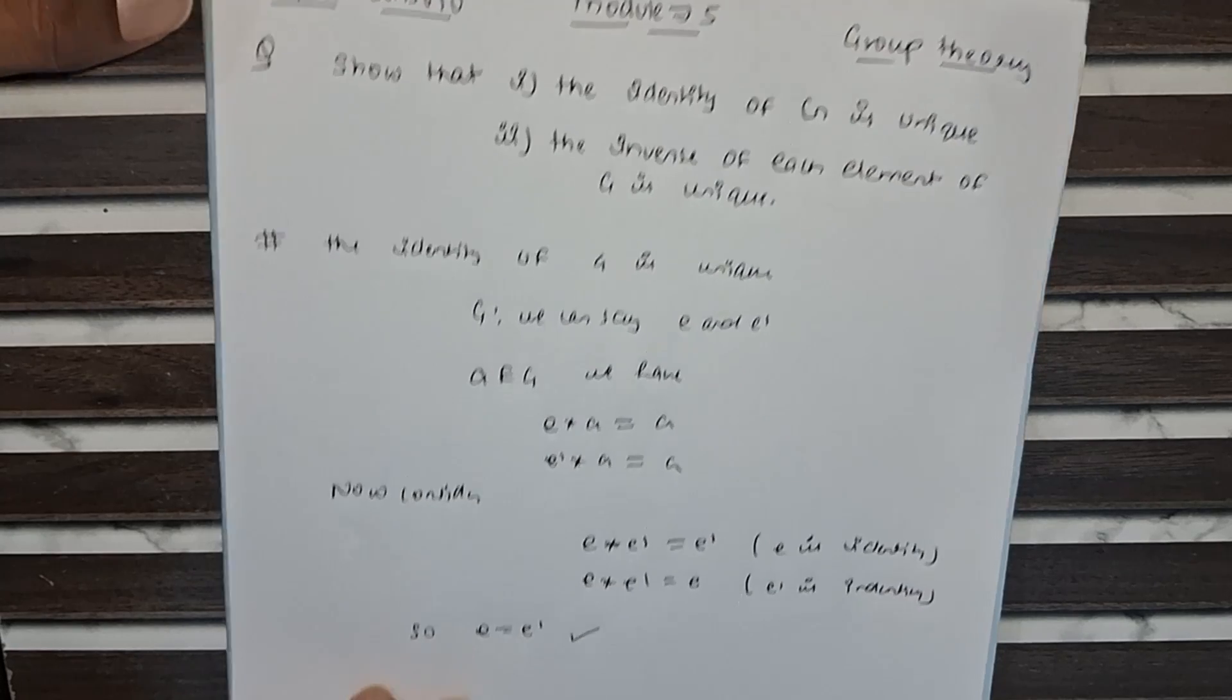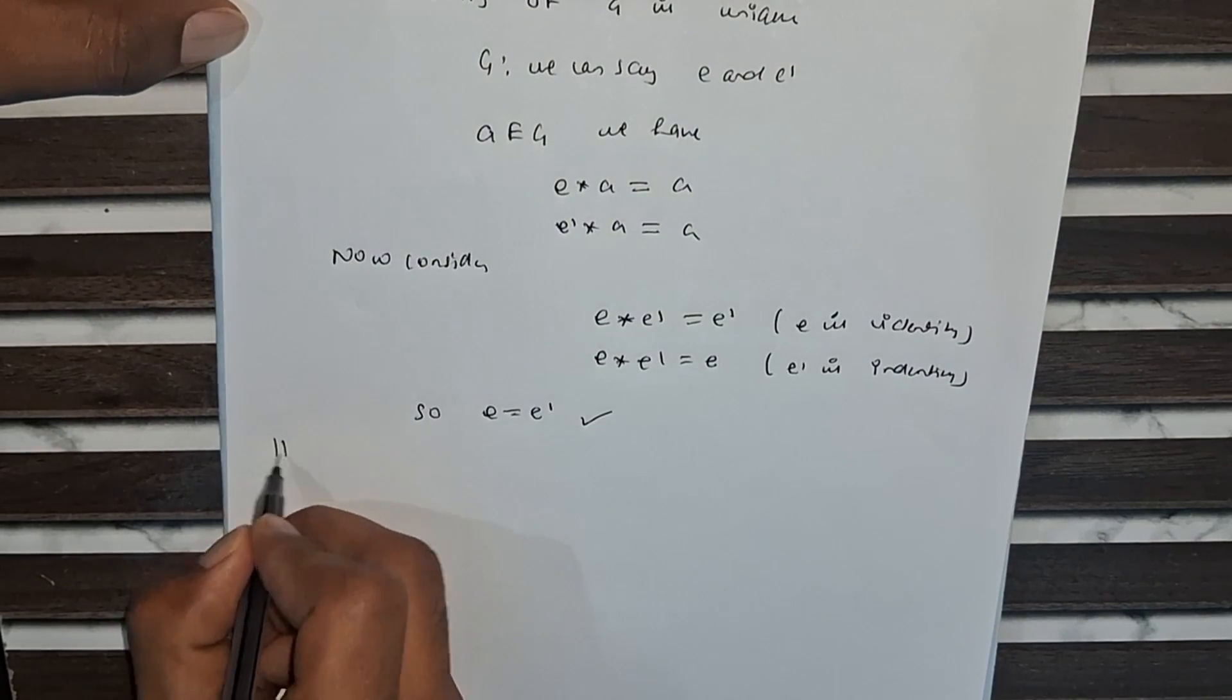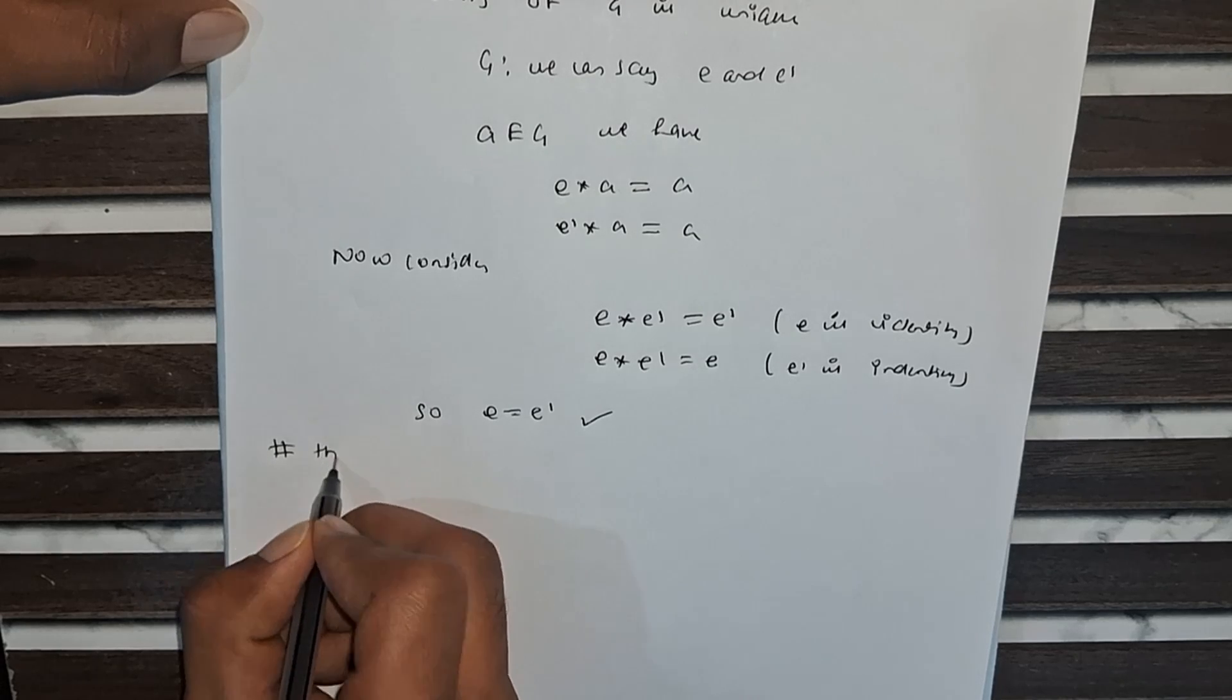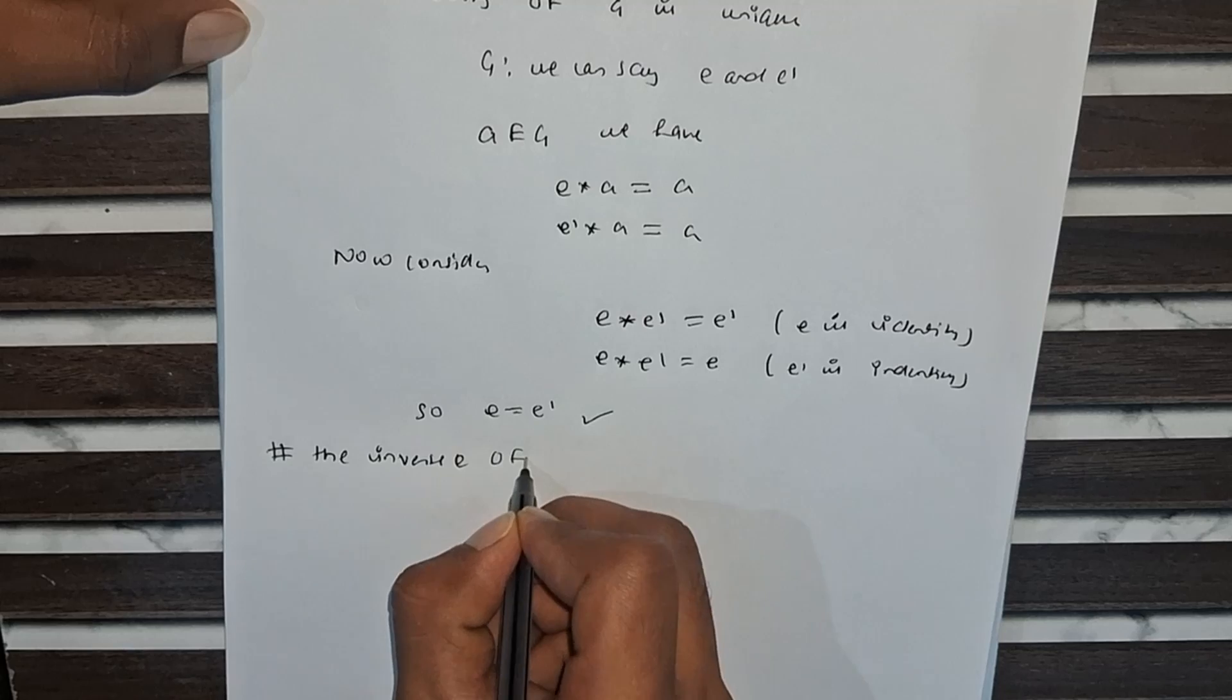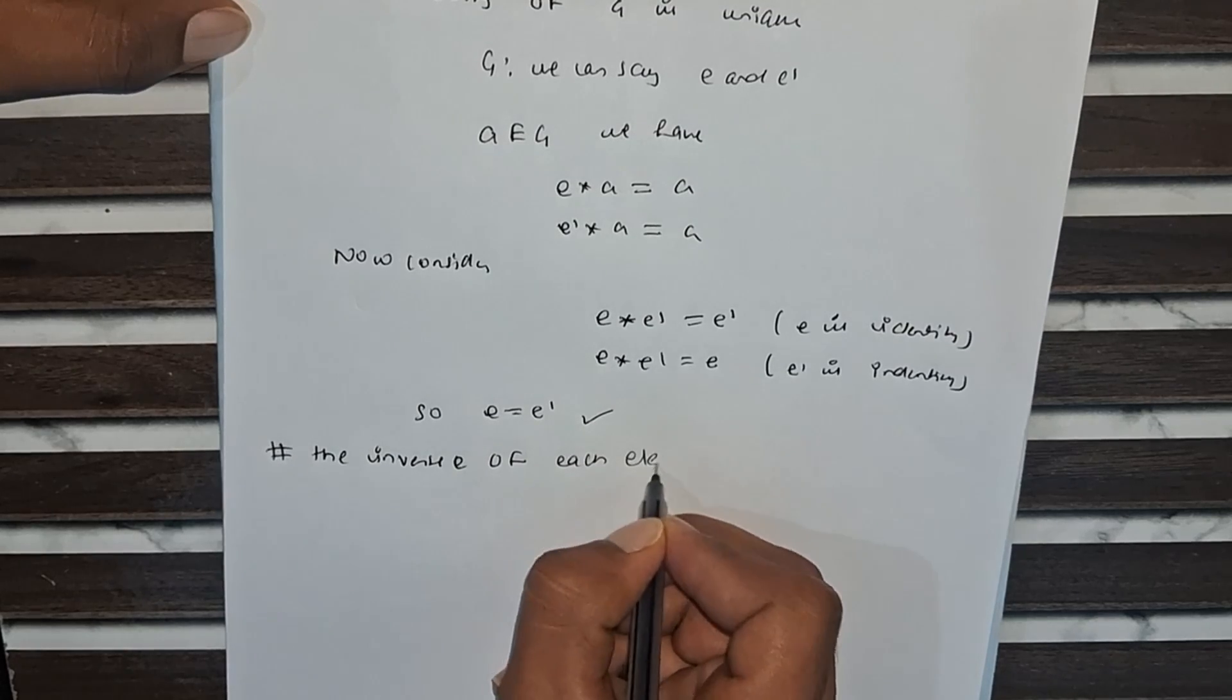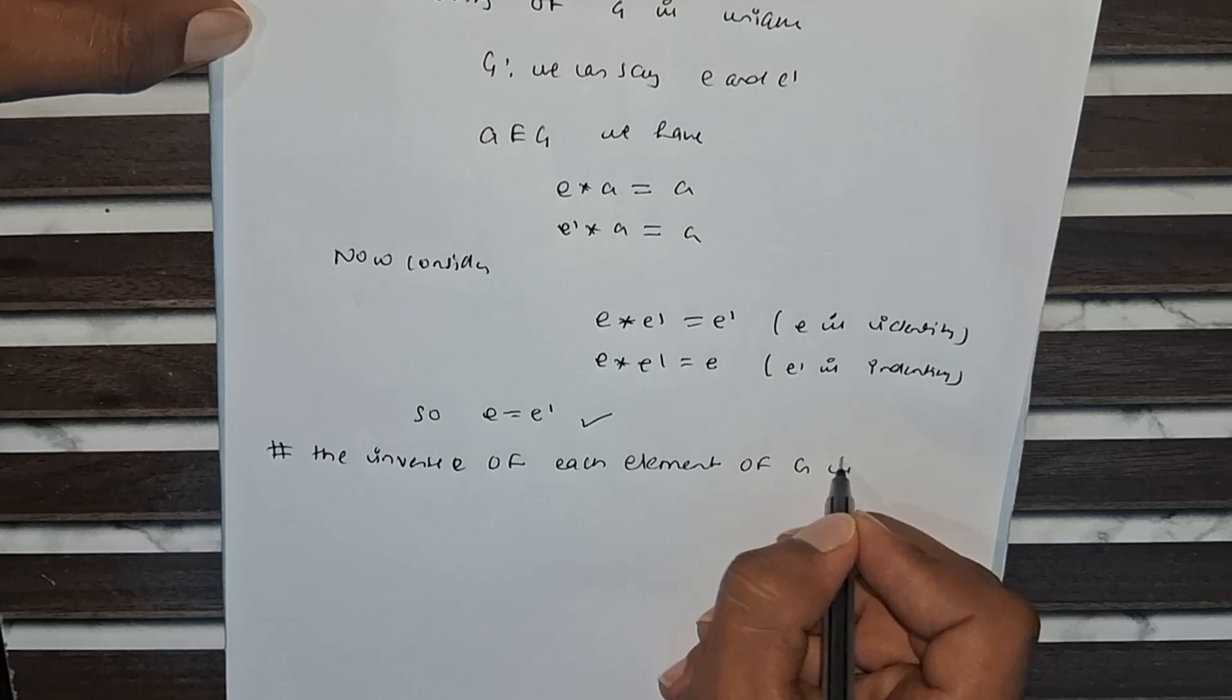Now go for the second part: the inverse of each element of G is unique.